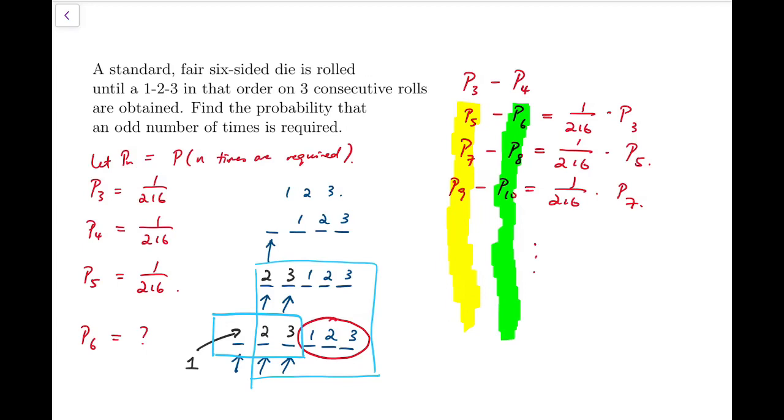However, P_3 minus P_4 is actually zero from our previous calculations. We have actually got that, so that's zero. Now we add them all up.